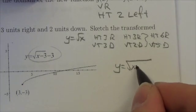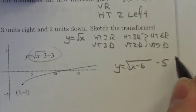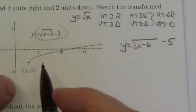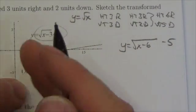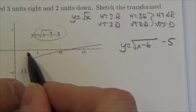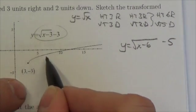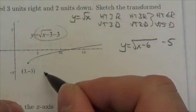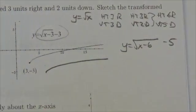That equation would look like this: 6 to the right would be x minus 6, 5 down would be minus 5 outside, so y = √(x-6) - 5. Three to the right puts the point here, then 2 down puts it at negative 5, and the graph looks like this.